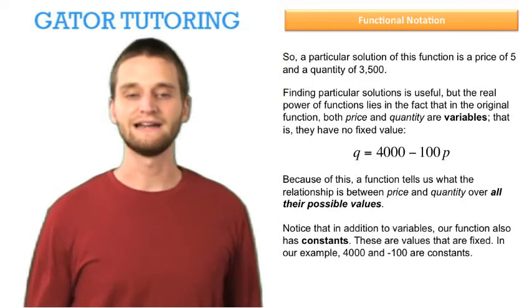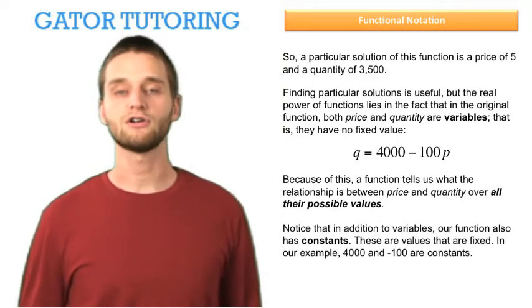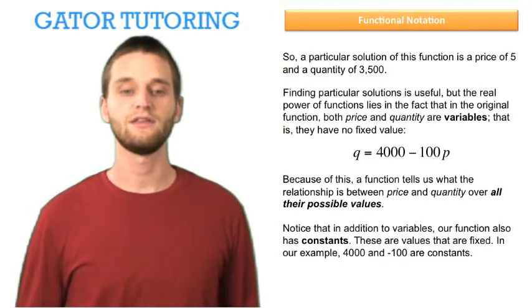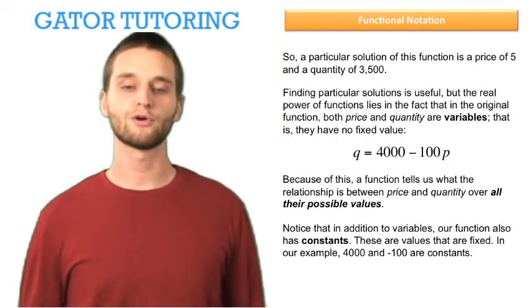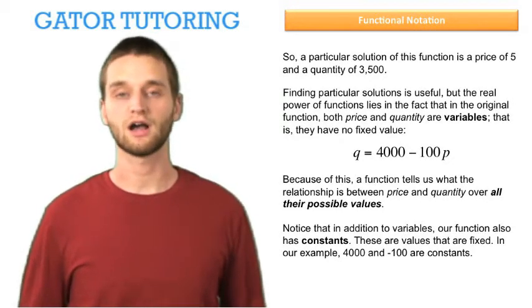Notice that in addition to variables, our function also has constants. These are values that are fixed. In our example, 4000 and minus 100 are constants.